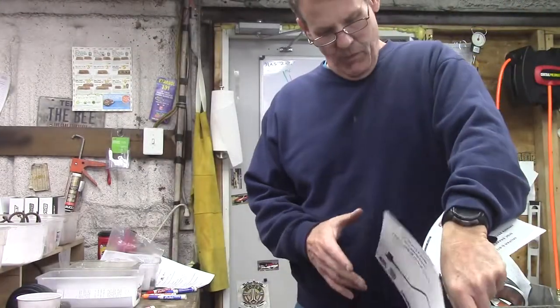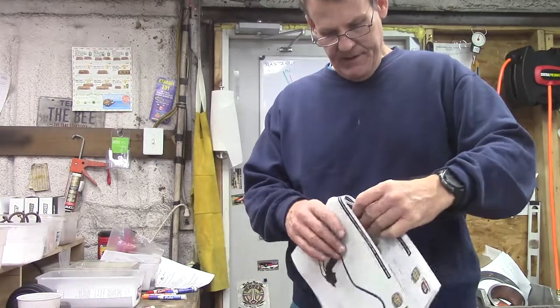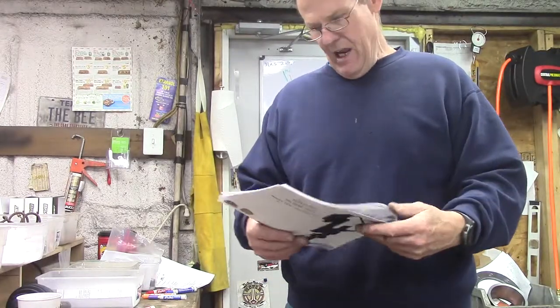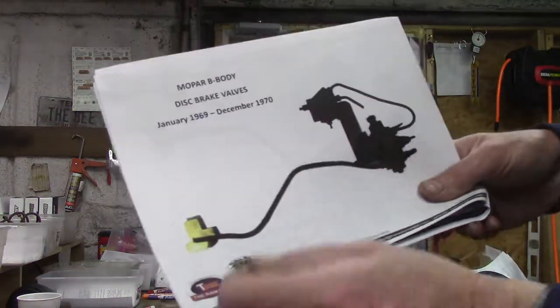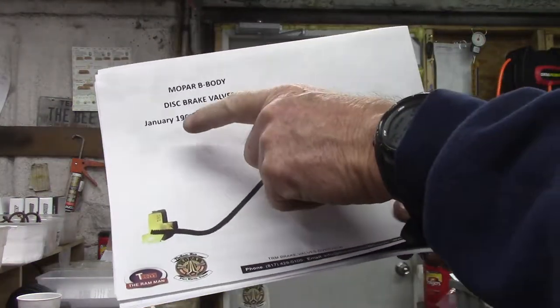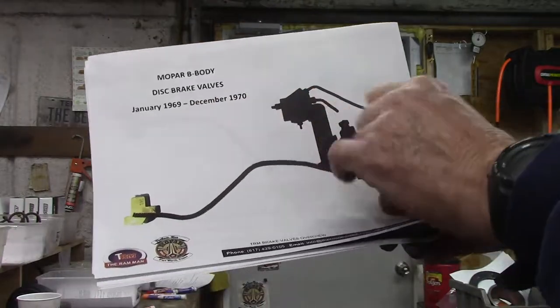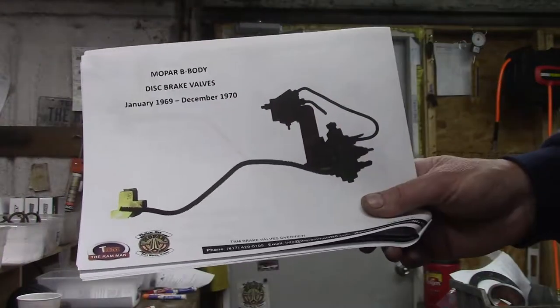Then, well they were upgrading fast because disc brakes was a new phenomenon hitting the road. So then they said okay, here we go, January '69, they started adding the metering valve.